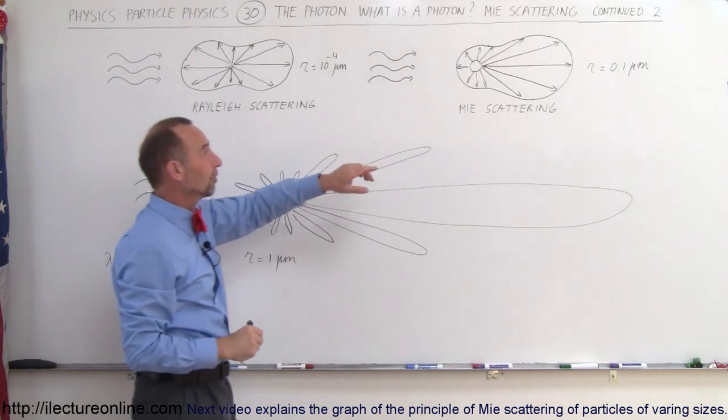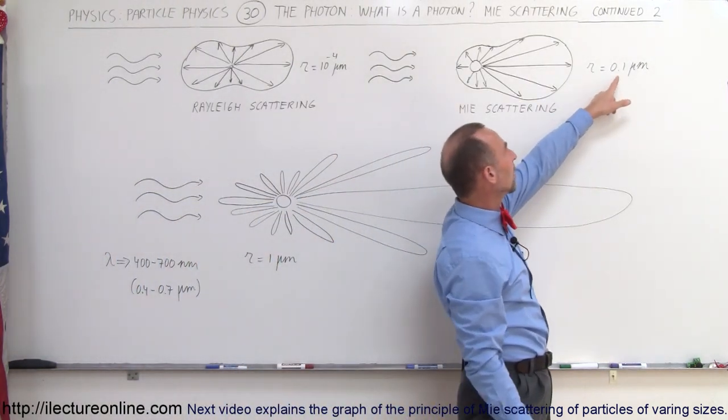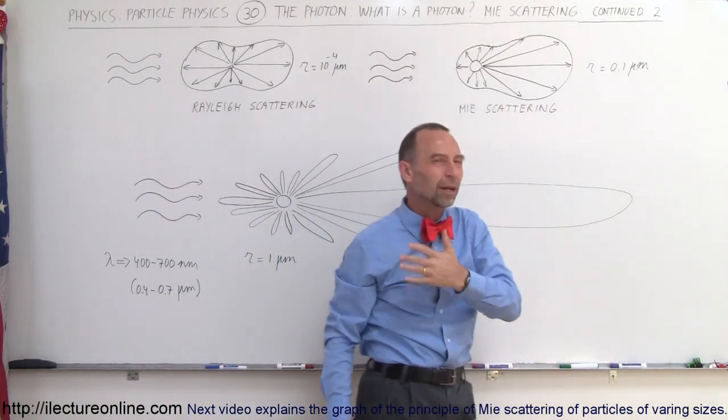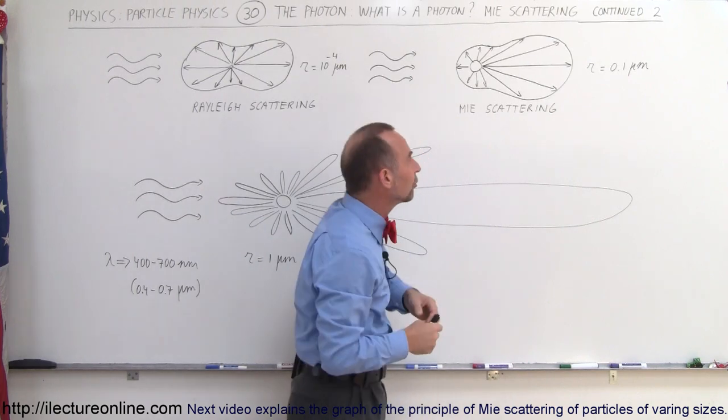When the particle gets larger, for example, when the radius of the particle gets to be about 0.1 micrometer, which is about 100 nanometers, about the size of a UV photon...